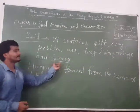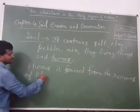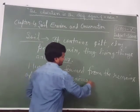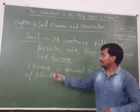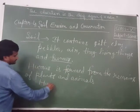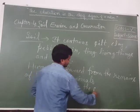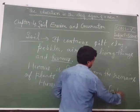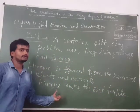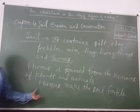Now what is humus? Humus is formed from the remains of plants and animals. Humus makes our soil fertile and it also retains the property to absorb water and keep our soil wet.